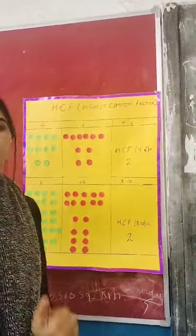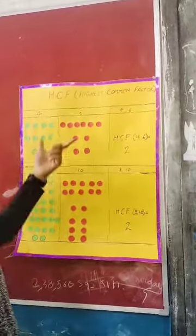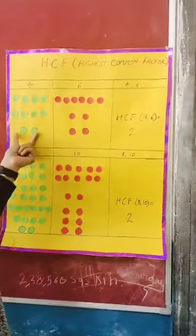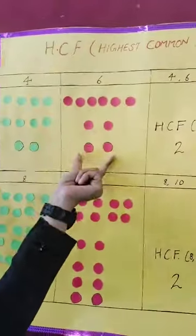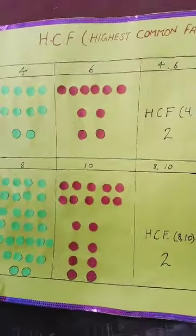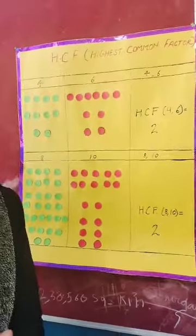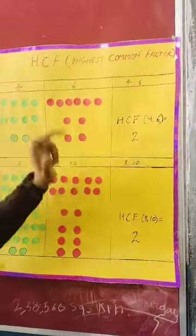Then what we can see? We can see that on both the sides there are equal circles. 2 circles here and 2 circles here. So it is the HCF of 2 numbers 4 and 6.